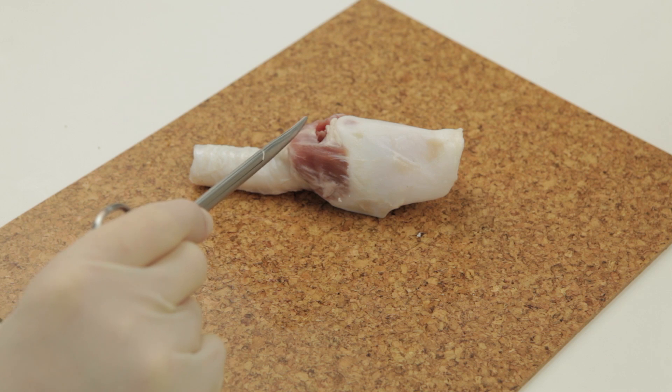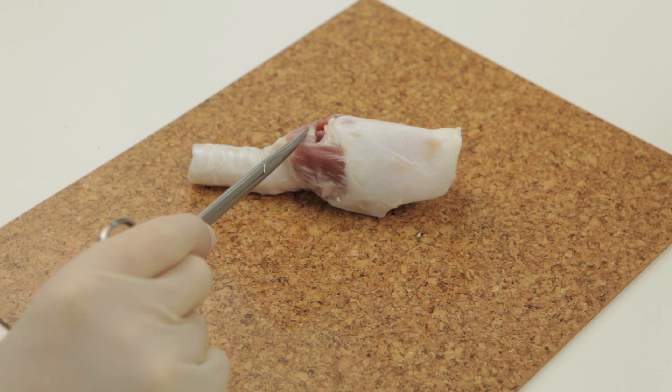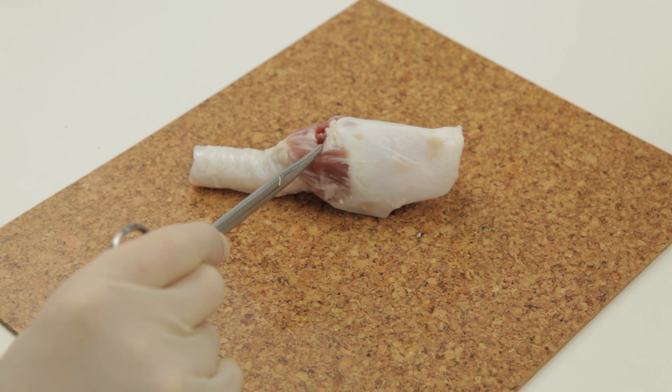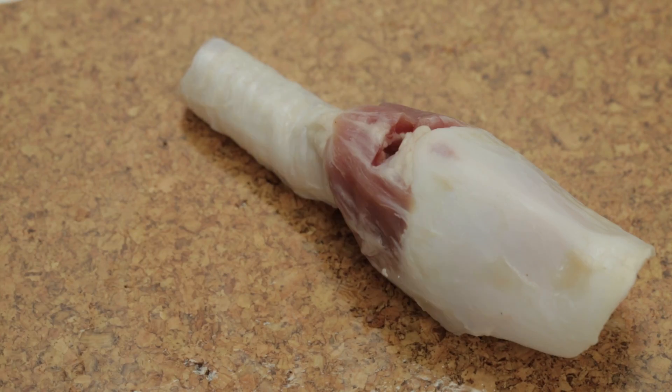For this station, we use an ovine larynx covered with skin. Here, we have removed the skin so you can appreciate the anatomy. The cricothyroid membrane has been incised.